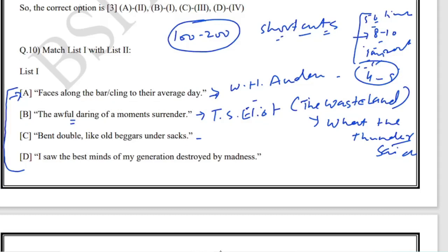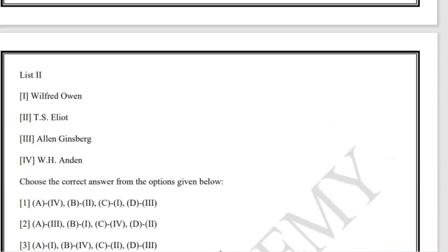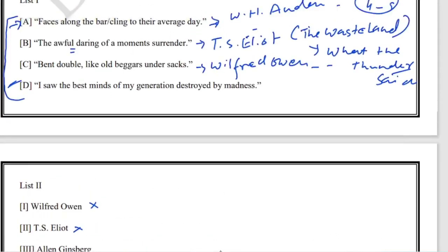'I saw the best minds of my generation destroyed by madness' - sometimes if you don't know the last line, you can eliminate the authors you've already identified. The fourth one is by Allen Ginsberg.